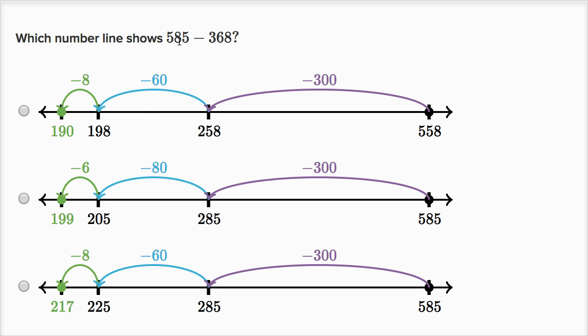Which number line shows 585 minus 368? Let's see, these second two number lines both start at 585, or we're starting our computation at 585. This one's starting at 558, so let's swap the numbers. So this one doesn't make sense, but let's look at these two choices.